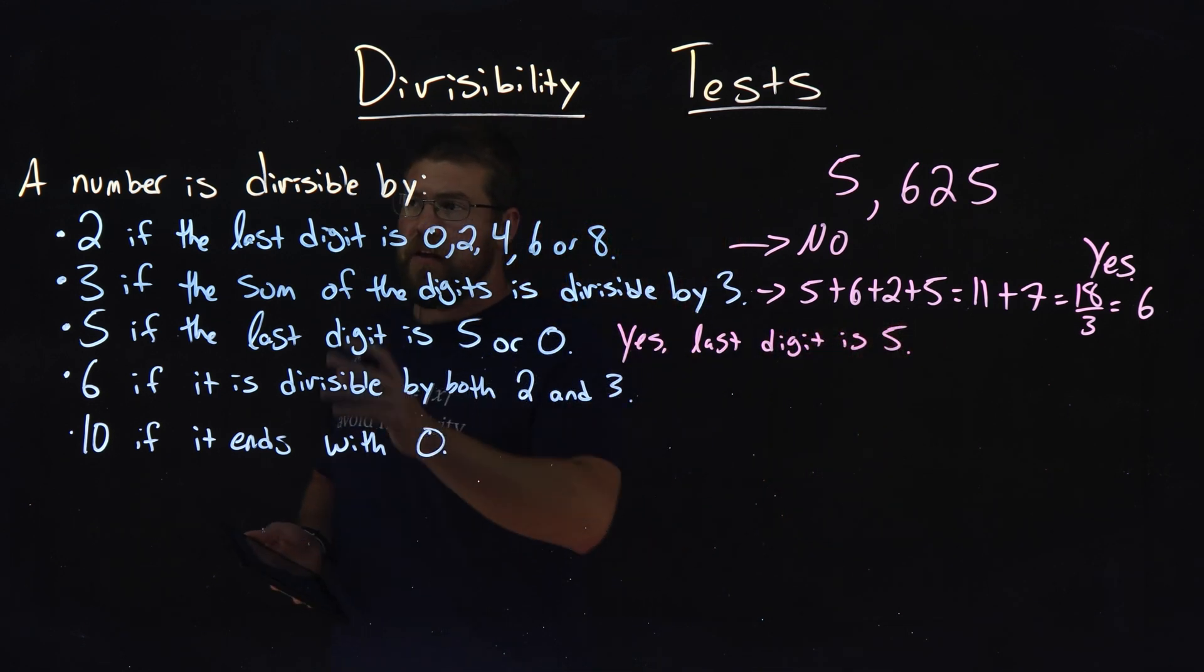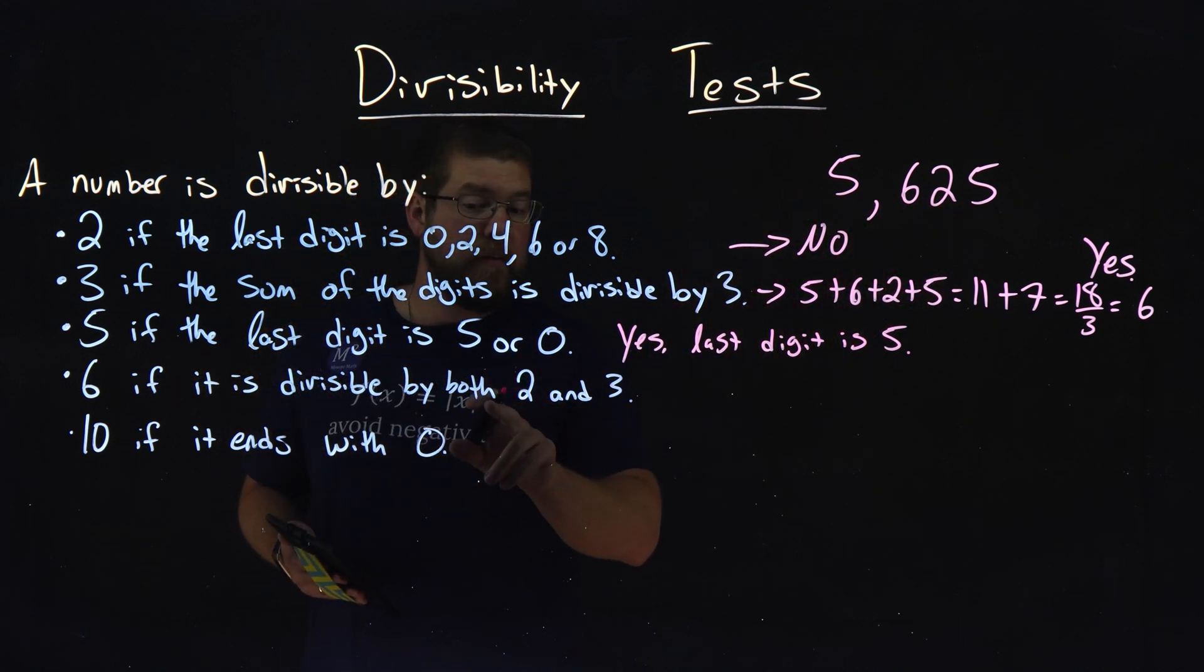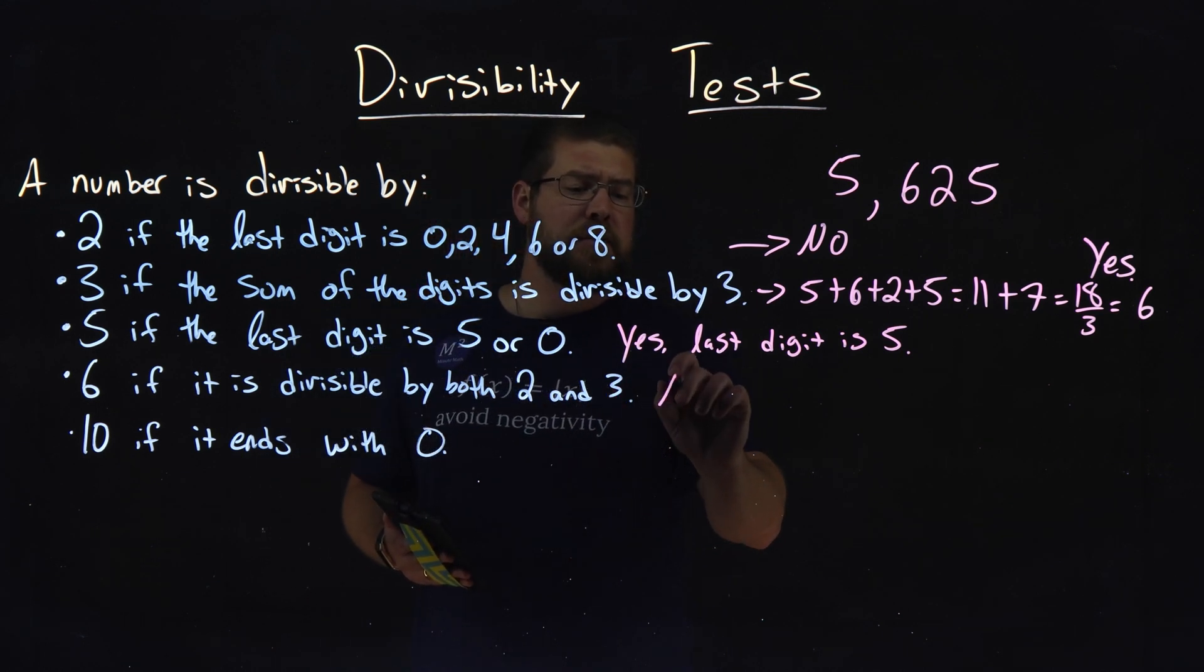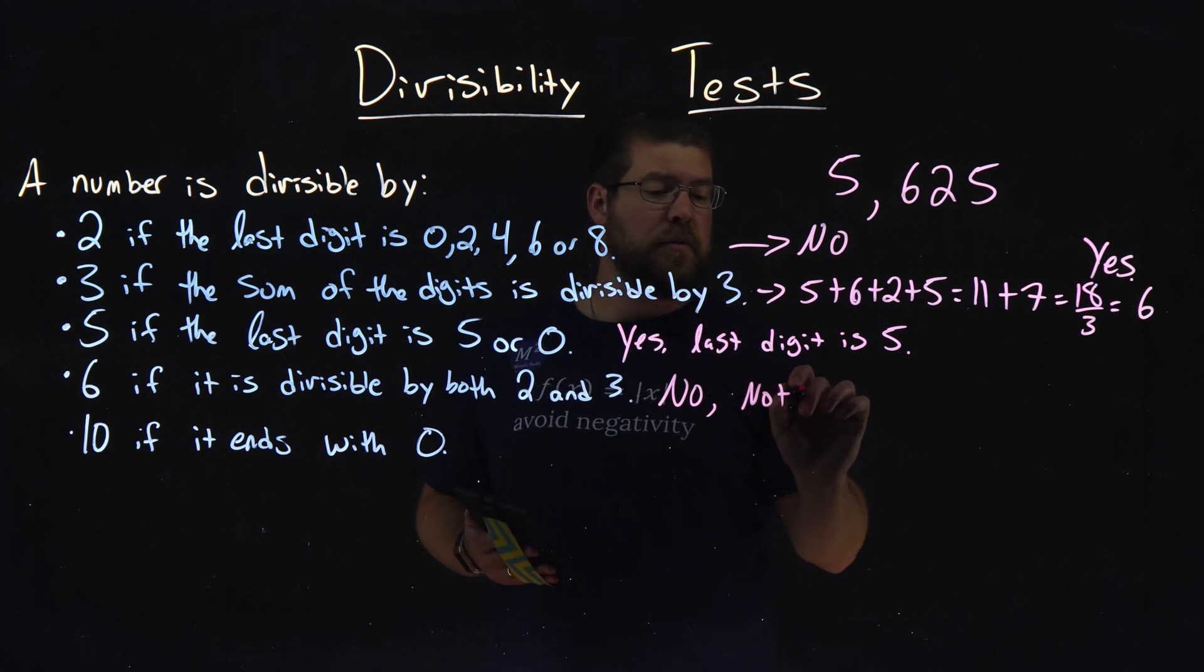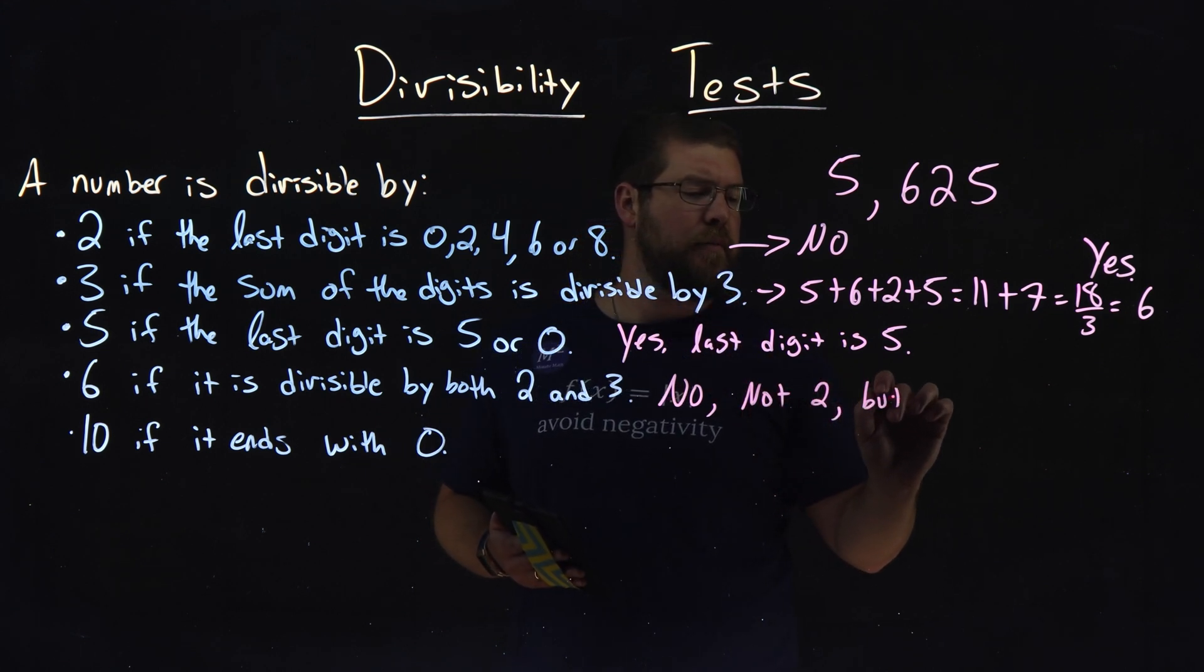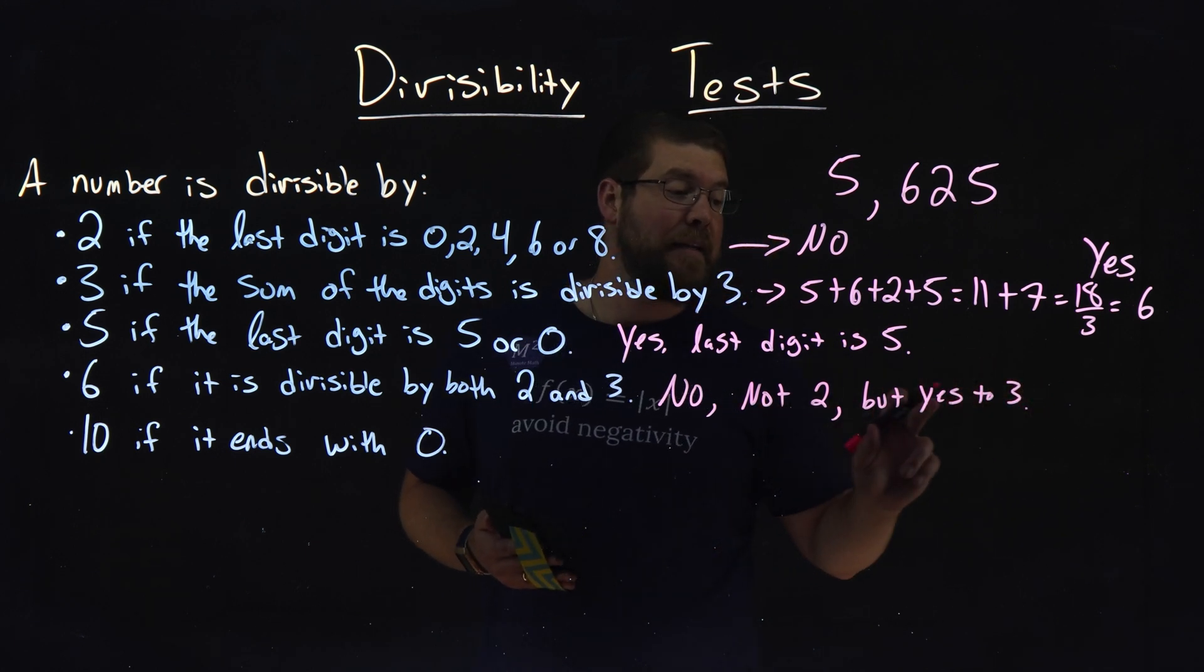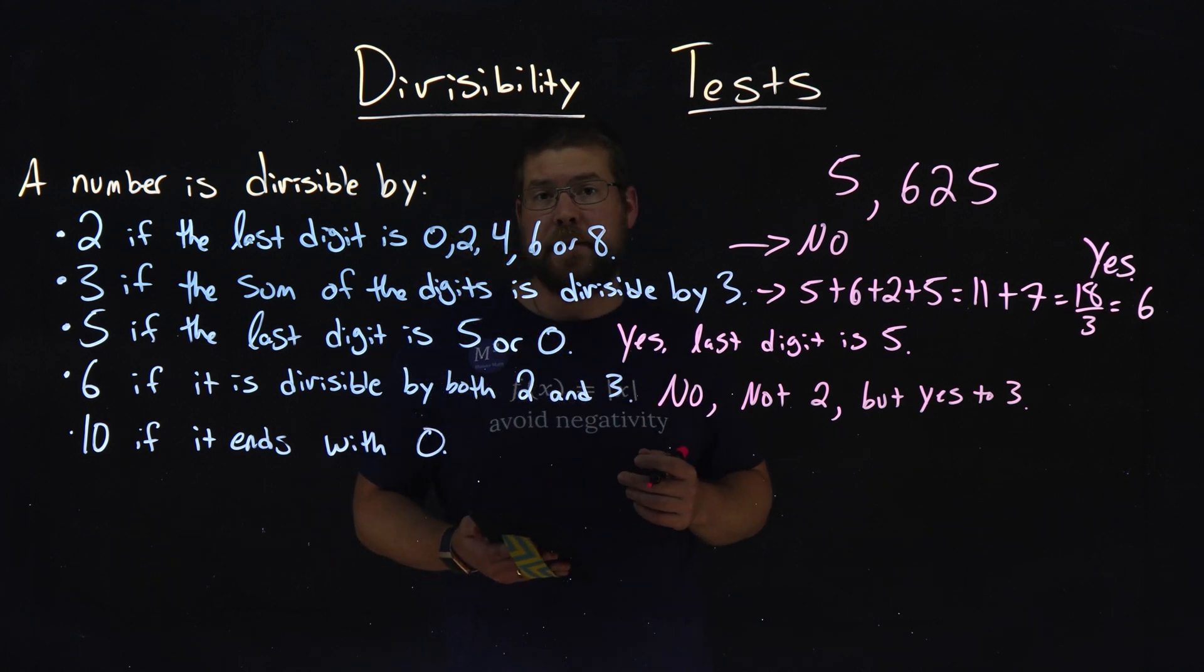Next one here. Is the number 5,625 divisible by 6? Well, is it both divisible by 2 and 3? The answer is no because it's not divisible by 2. Not 2, but yes 3. But doesn't matter. We needed both. So in this case, no, it's not divisible by 6.